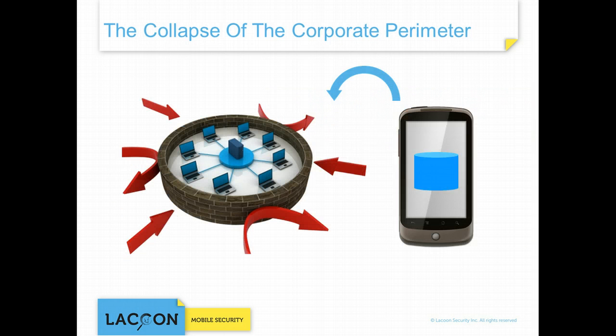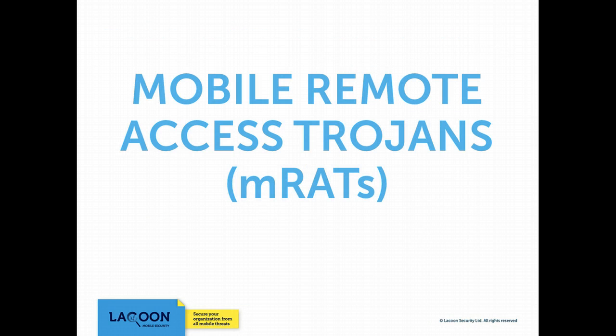It is the mobile that has become the weakest link in the organization's security chain. By targeting the mobile device, a motivated attacker can gain full access both to sensitive business material and to the enterprise's internal network. In particular, an attacker can infect the mobile device with a Mobile Remote Access Trojan, also known as an EMRAT. As its name implies, a remote access Trojan takes full control of the sensors and the hardware of the mobile device without the owner's knowledge.